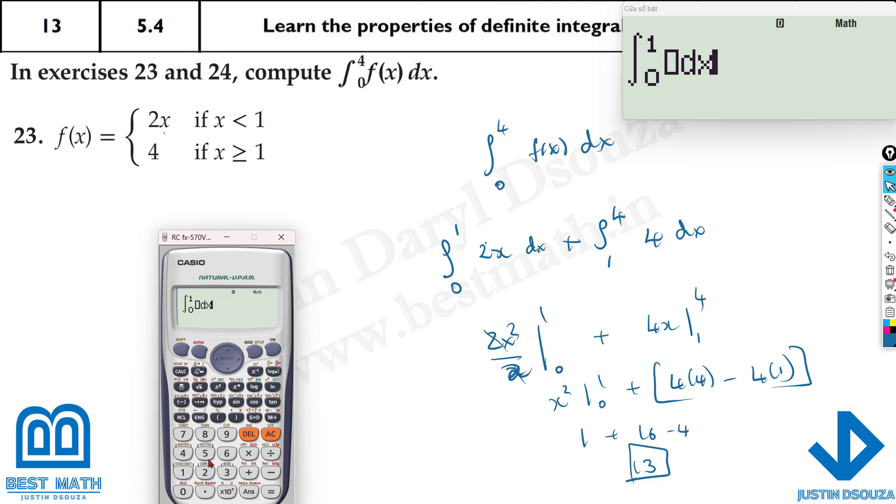For x less than 1, it's 2x, right? So I'll write 2x here. So add this, go next, and write plus again integral. Now what is the remaining one? You can easily write 4. The limit will be from 1, since it's greater than 1. What is the maximum limit given? It's 4. So the answer must be 13.